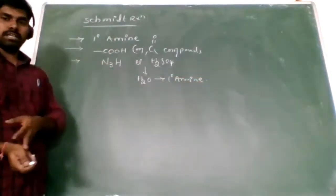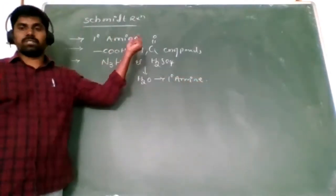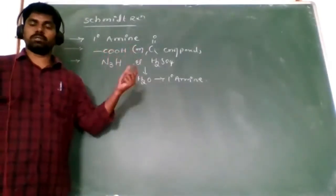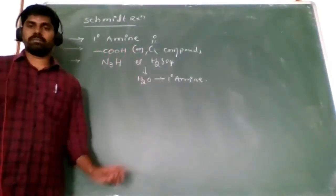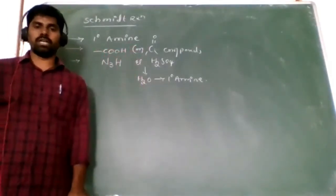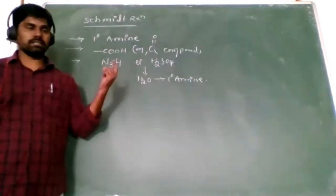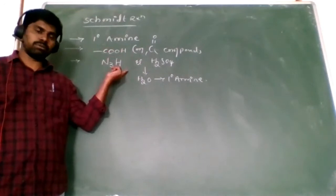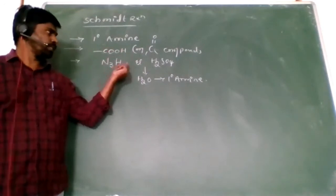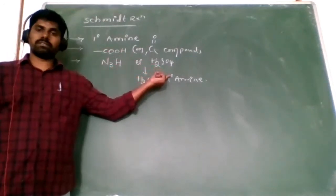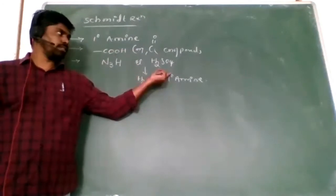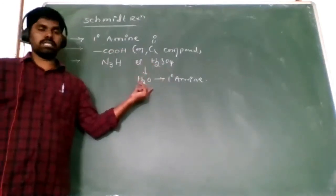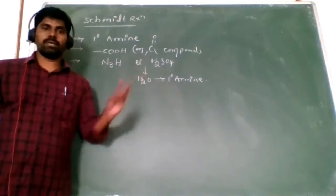In the Schmidt reaction, we prepare only primary amines. When the carboxylic acid reacts with the hydrazoic acid in the presence of strong acid — here sulfuric acid — after hydrolysis, we get the primary amines.